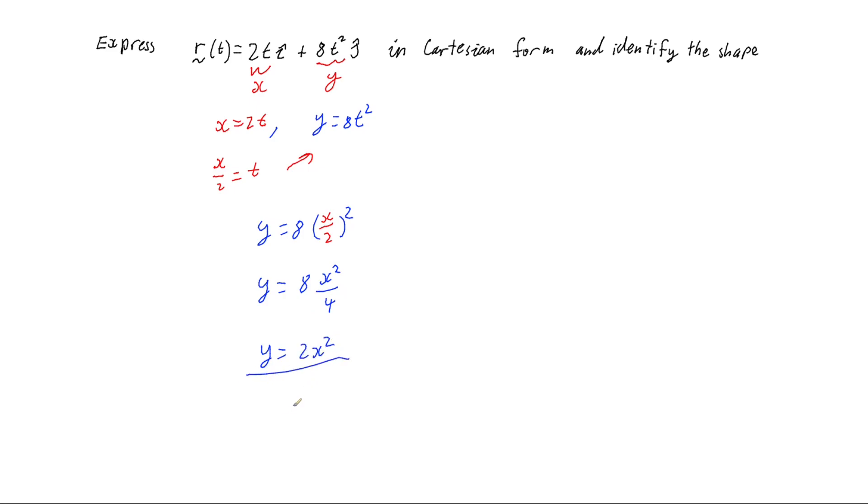So that's our equation in Cartesian form: y = 2x². And we can see that this is x squared, so it's a parabola because anything where y equals something with x² in it is going to give us a parabola.